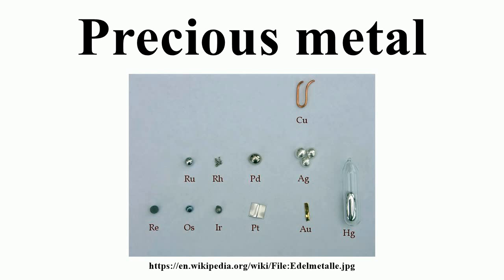Aluminium is an initially precious metal that became common. While aluminium is the third most abundant element and most abundant metal in the Earth's crust, it was at first found to be exceedingly difficult to extract the metal from its various non-metallic ores. The great expense of refining the metal made the small available quantity of pure aluminium more valuable than gold. Bars of aluminium were exhibited at the Exposition Universelle of 1855, and Napoleon III's most important guests were given aluminium cutlery, while those less worthy dined with mere silver.